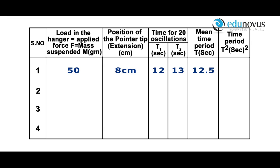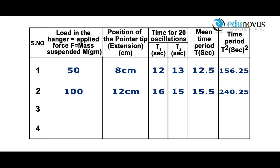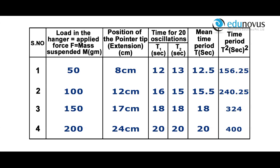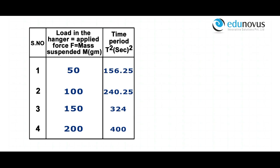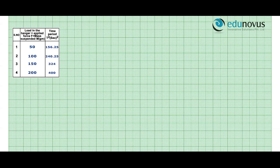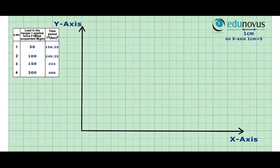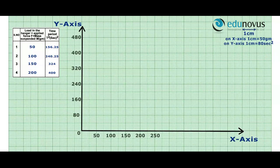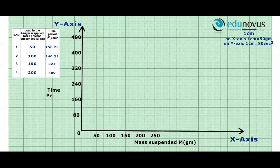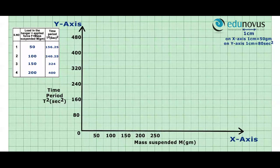The corresponding time period squared is 156.25. Similarly, values for loads of 100, 150, and 200 grams are recorded. Now we plot a graph between mass suspended M on the x-axis and time period squared T² on the y-axis. The scale on the x-axis is 1 centimeter equal to 50 grams, and on the y-axis 1 centimeter is equal to 80 seconds squared.